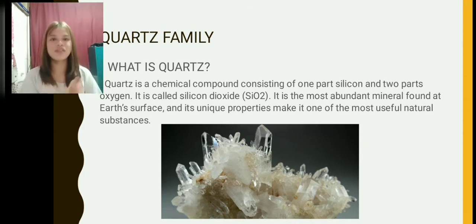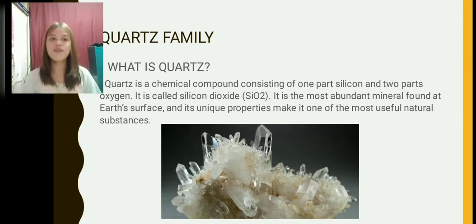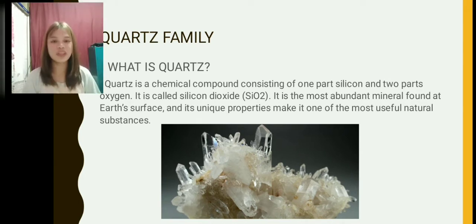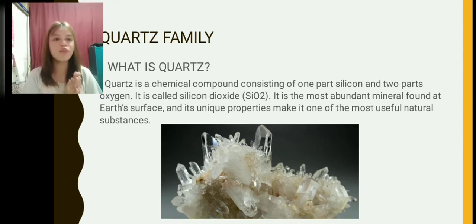What is Quartz? Quartz is a chemical compound consisting of one part silicon and two parts oxygen — it is called silicon dioxide. It is the most abundant mineral found at Earth's surface and its unique properties make it one of the most useful natural substances.